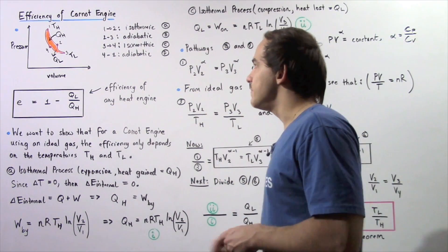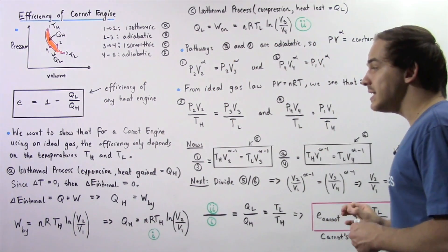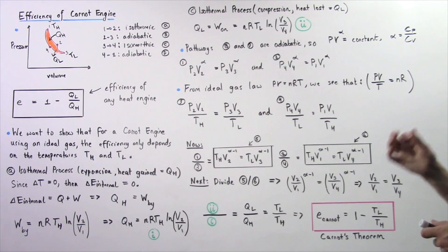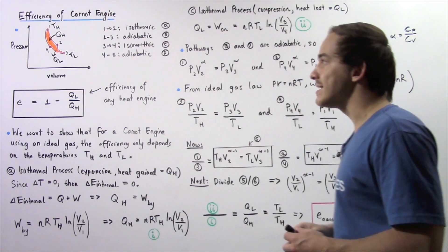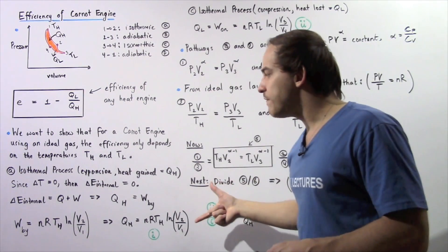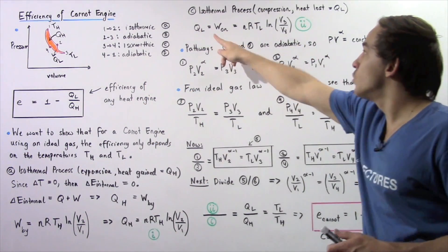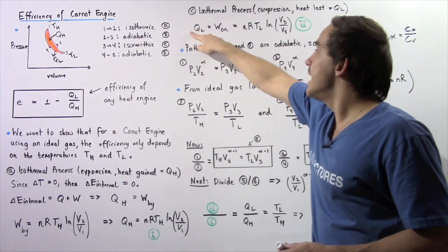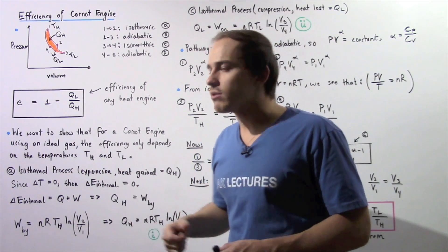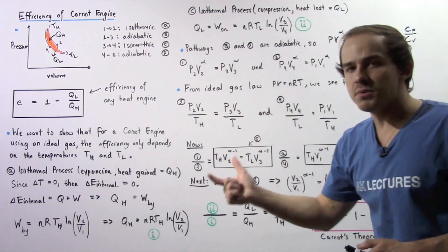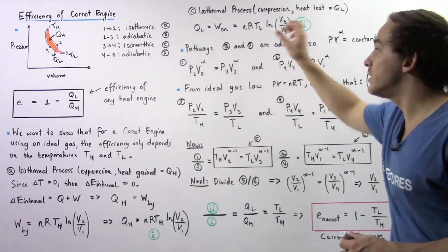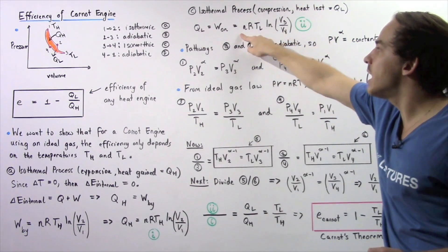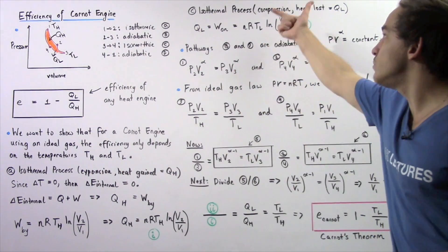Now let's move on to process C. Process C is once again an isothermal process, so the change in temperature is zero. The difference is that now, instead of expanding, we're compressing the gas, and heat QL is lost by our ideal gas. Following the same steps as in process A, the heat lost QL equals N·R·TL·ln(V3/V4), where we switch the volume ratio because the sign is negative — we lose heat here rather than gain it. Let's call this equation 2i.